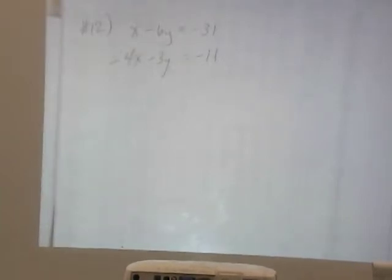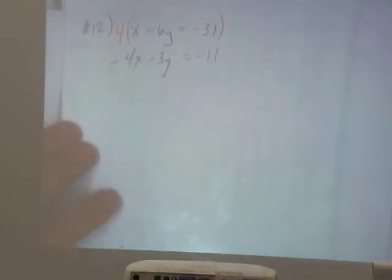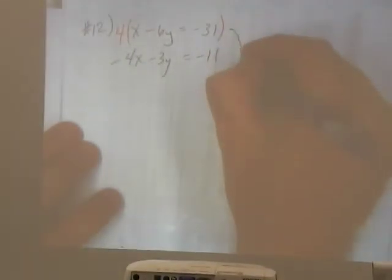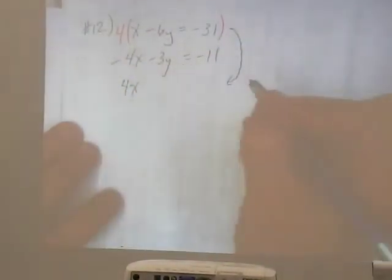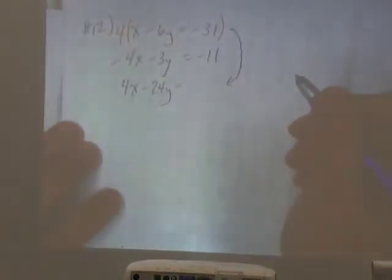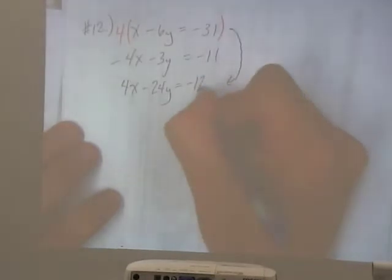So let's multiply the top one by positive 4. So we'll end up with, let me write it down here. We'll end up with 4x minus 24y is equal to negative 124.